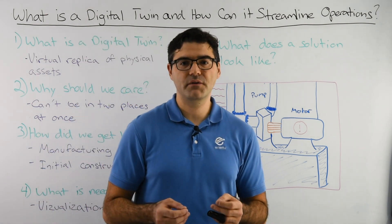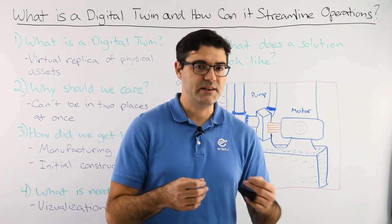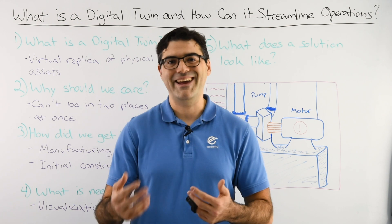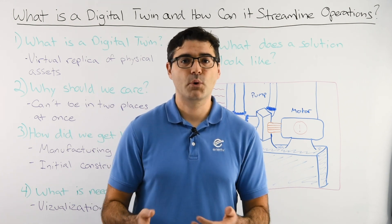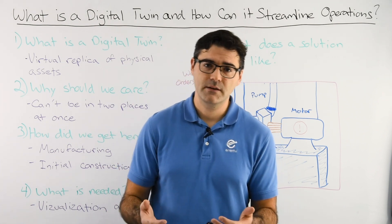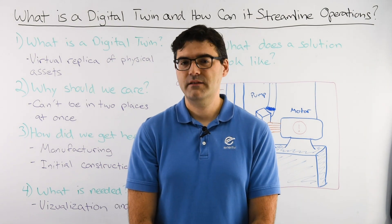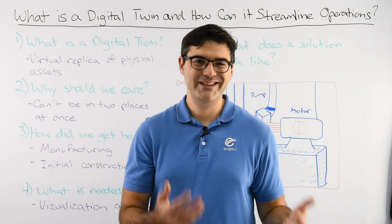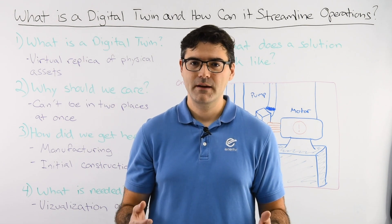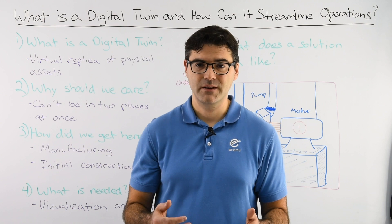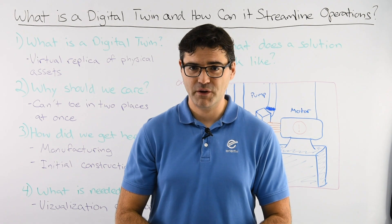Using that context, the engineer on the ground — who may or may not know that building very well — can be enabled and put in touch with other individuals who can aid and support rectifying and resolving the problem, which ultimately helps streamline and optimize operations in your building. In summary, the combination of imaging technology and the Internet of Things now lets us leverage digital twins beyond just manufacturing and initial construction, but for managing and maintaining existing operations in commercial real estate portfolios.